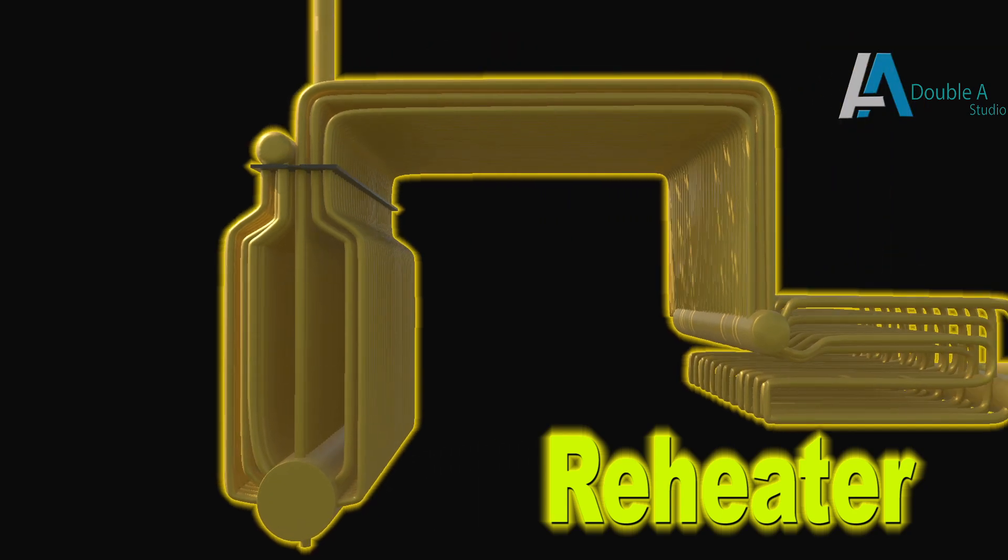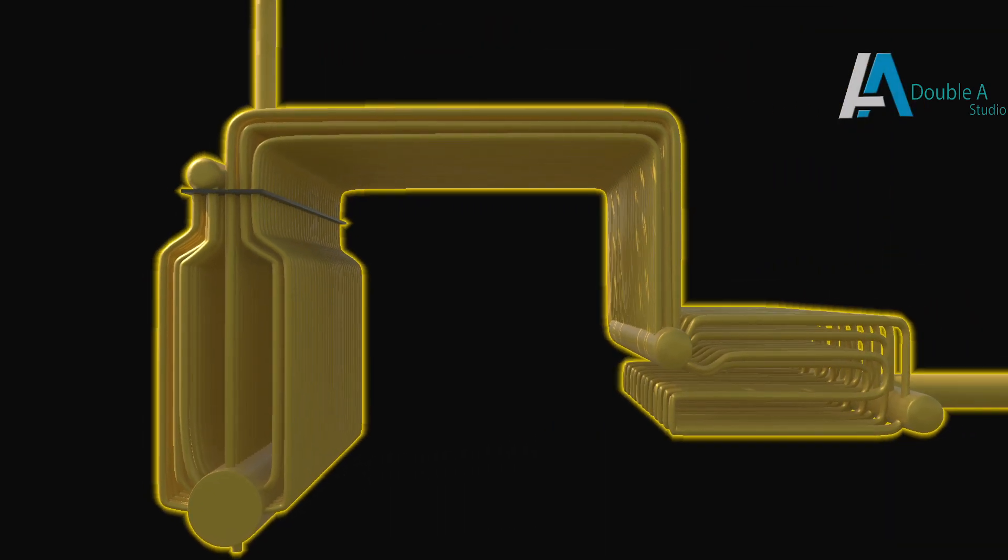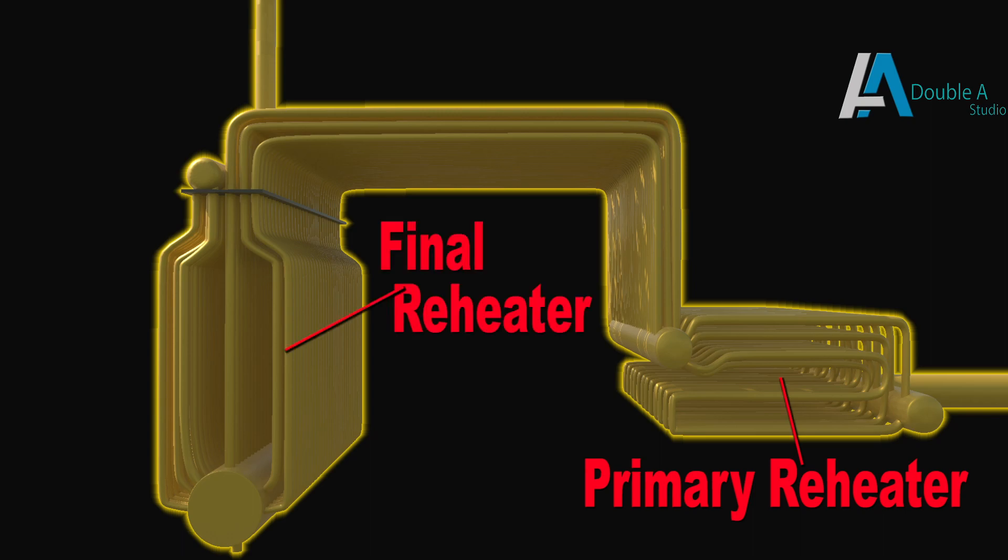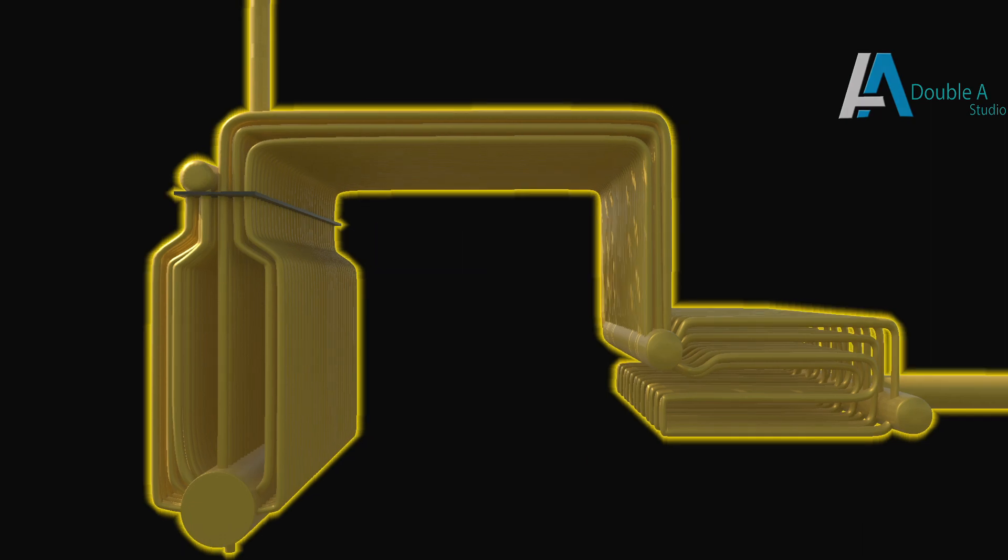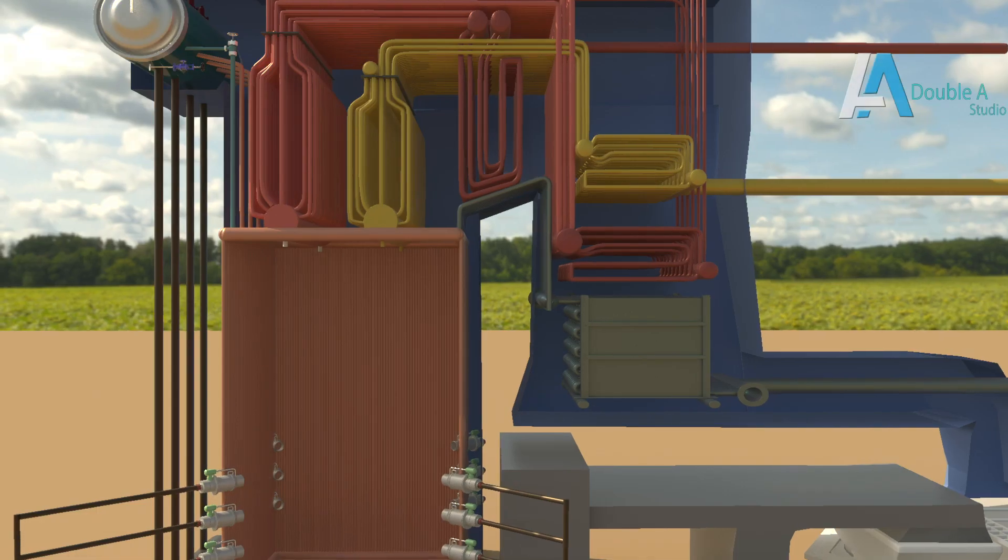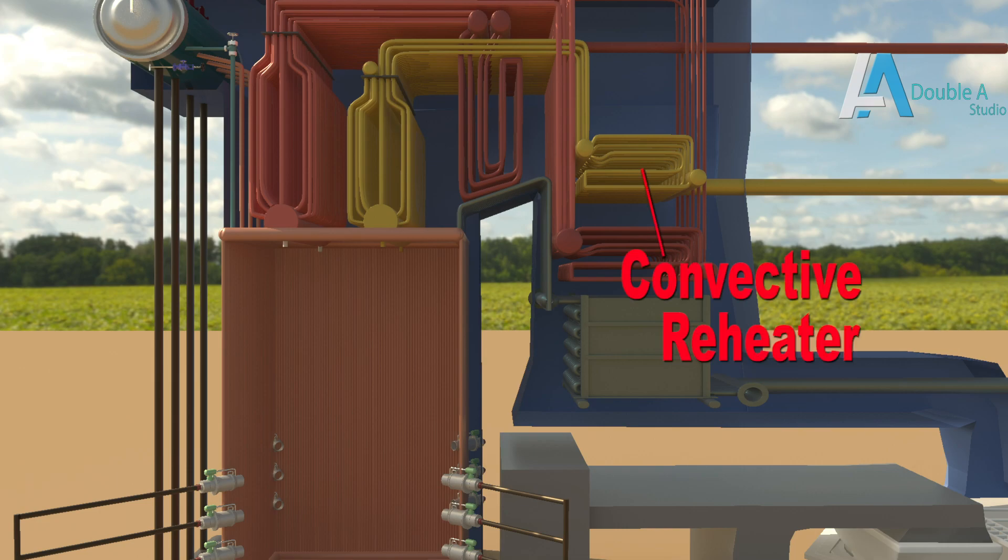Here we can see two types of reheaters namely primary reheater and final reheater. These can also be termed as convective and radiant type reheaters respectively. However, their number and location can be different depending upon type and size of boiler.